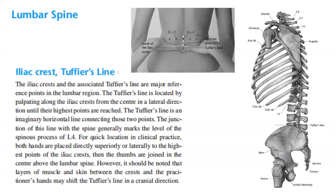The junction of this line with the spine generally marks the level of the spinous process of lumbar 4. For a quick location in clinical practice, both hands are placed directly, superiorly, or laterally to the highest points of the iliac crests. Then the thumbs are joined in the center above the lumbar spine.